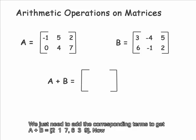We just need to add the corresponding entries to get A plus B equals, in the first row: 2, 1, 7, and in the second row: 6, 3, 9.